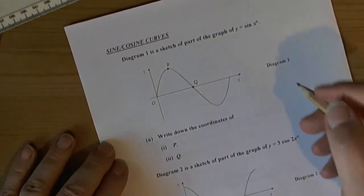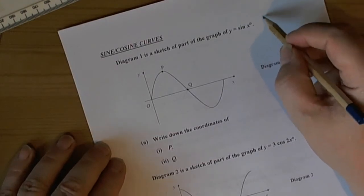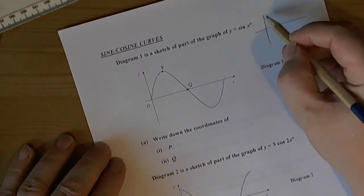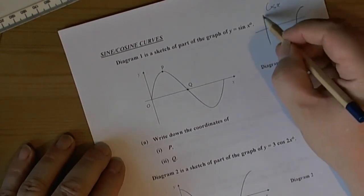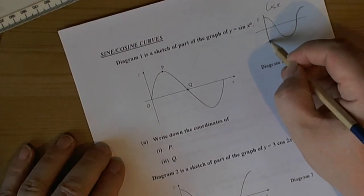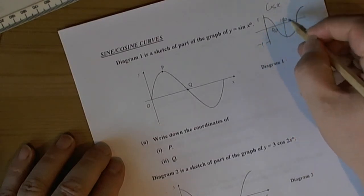Okay, sine and cosine curves. When we see a question involving the sine and cosine curve we should really have in mind the two standard curves. So if we take cosx then cosx is like the runny nose so it goes from 1 down to minus 1 and cuts at 90, bottoms at 180